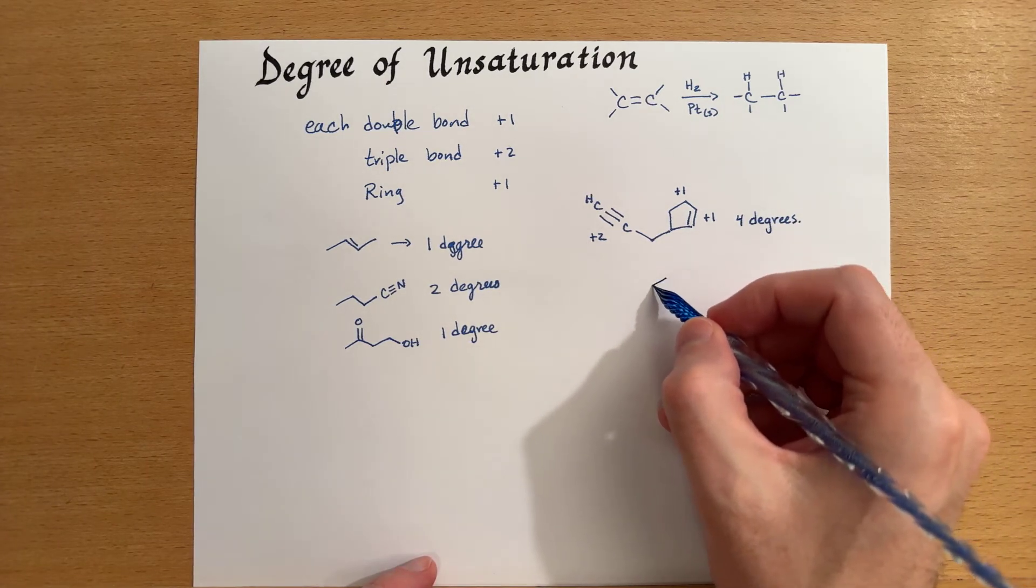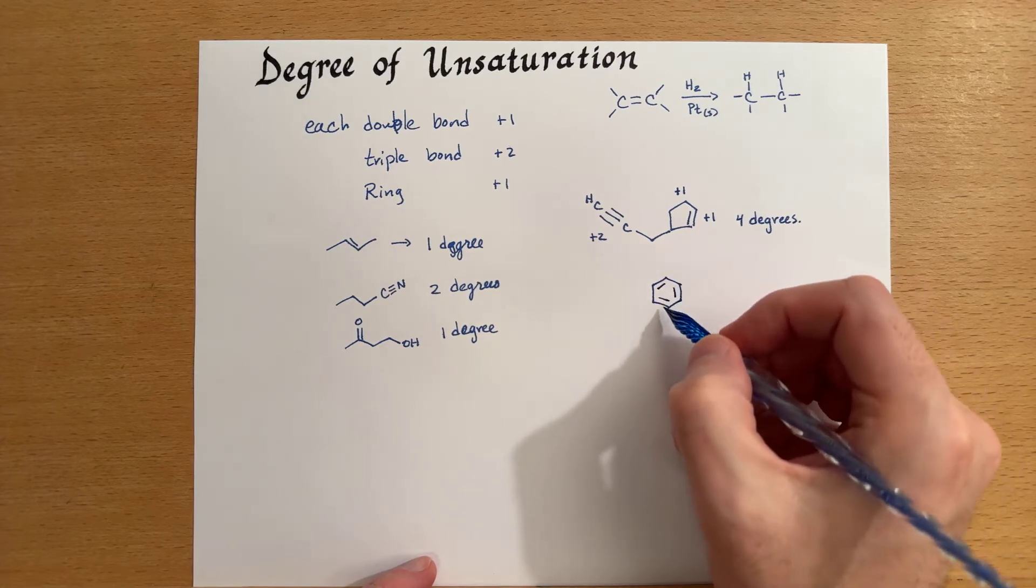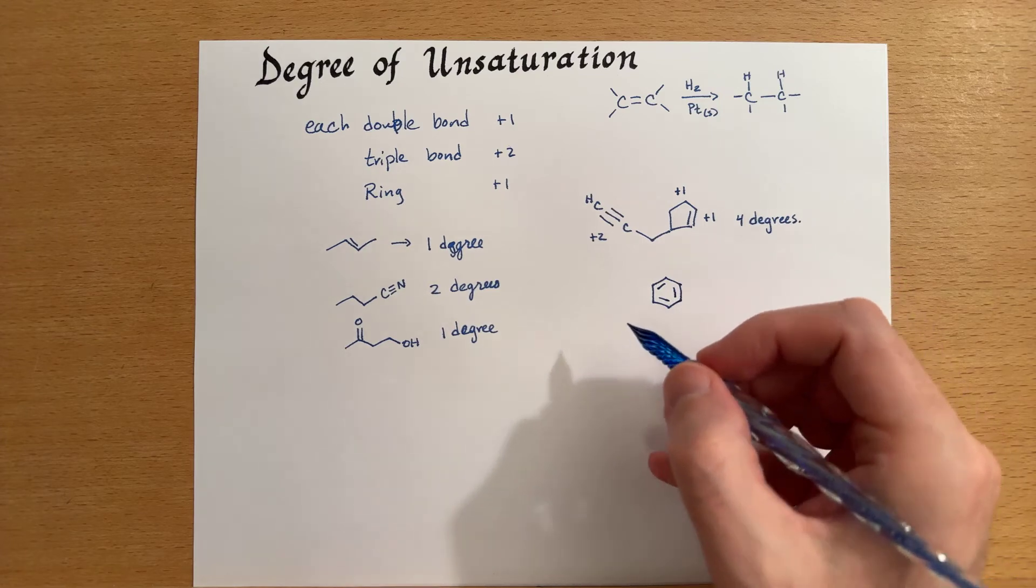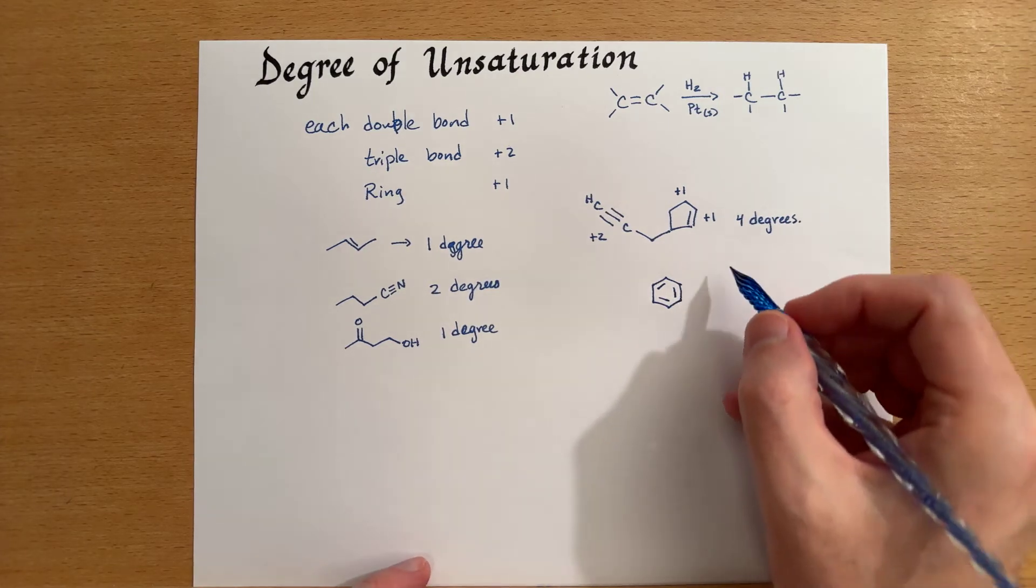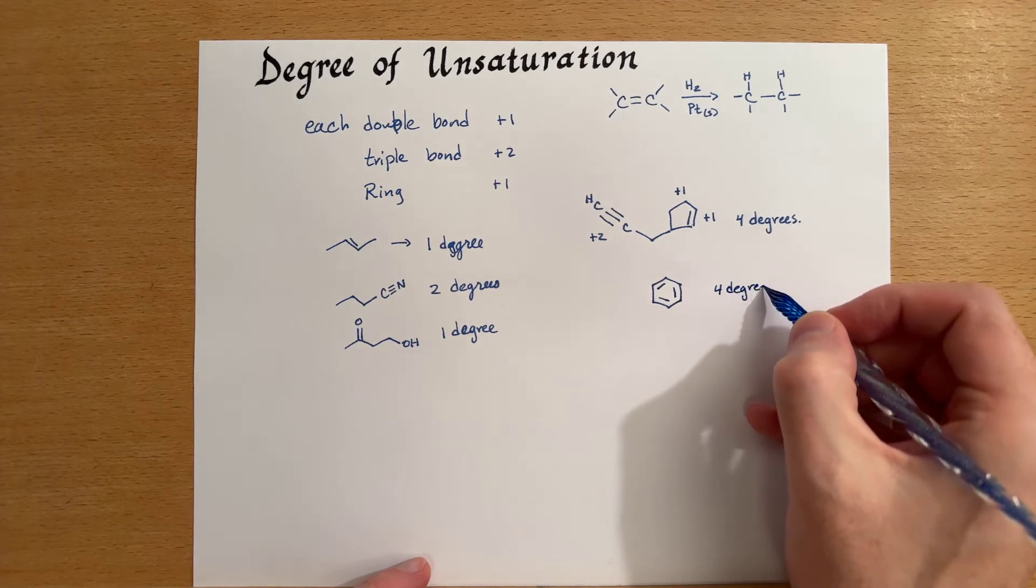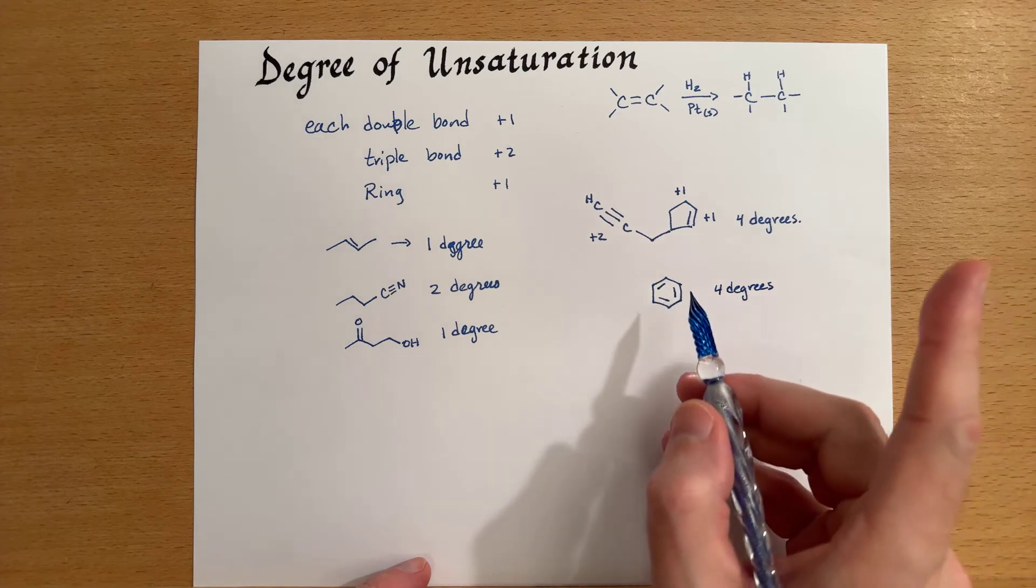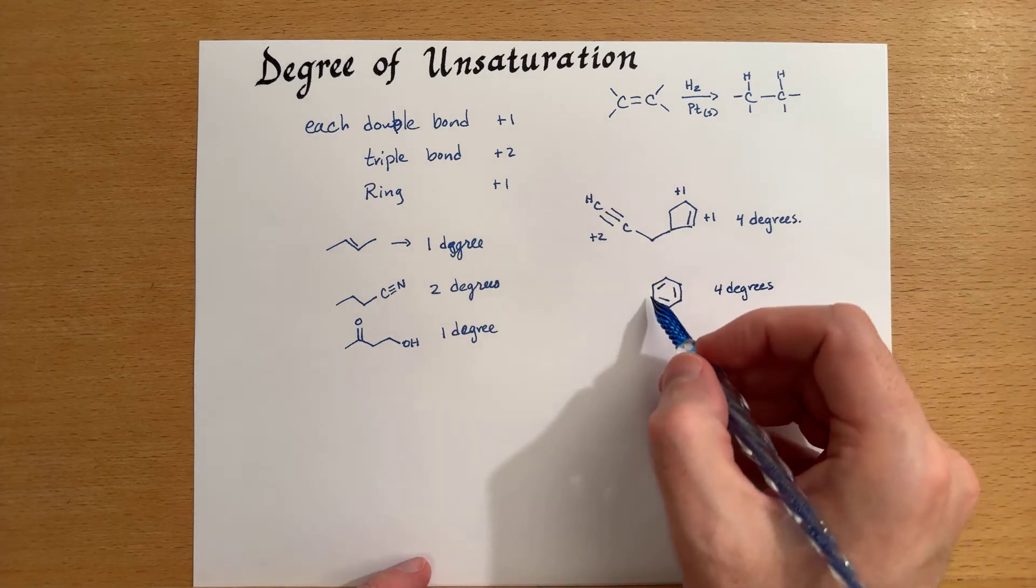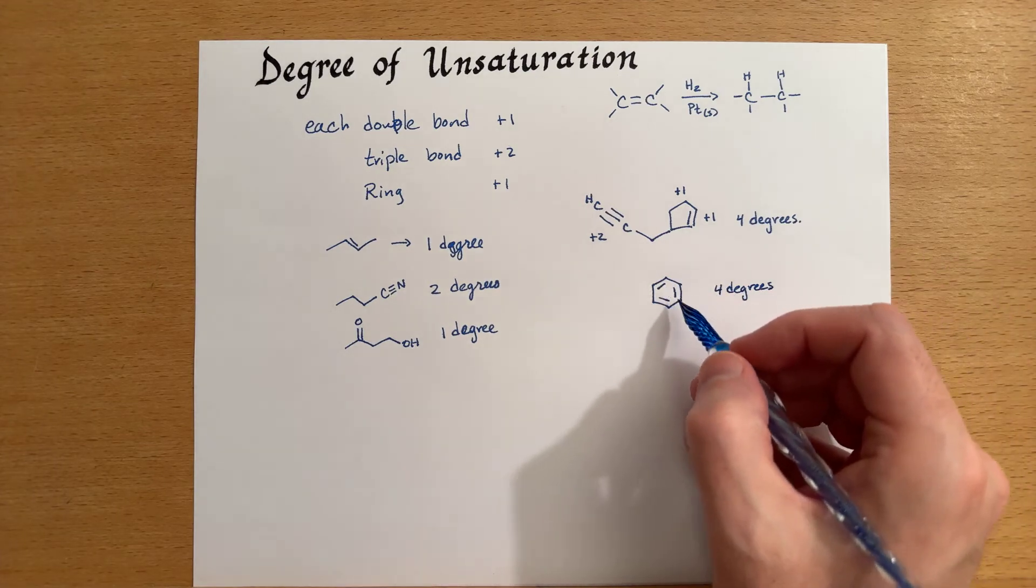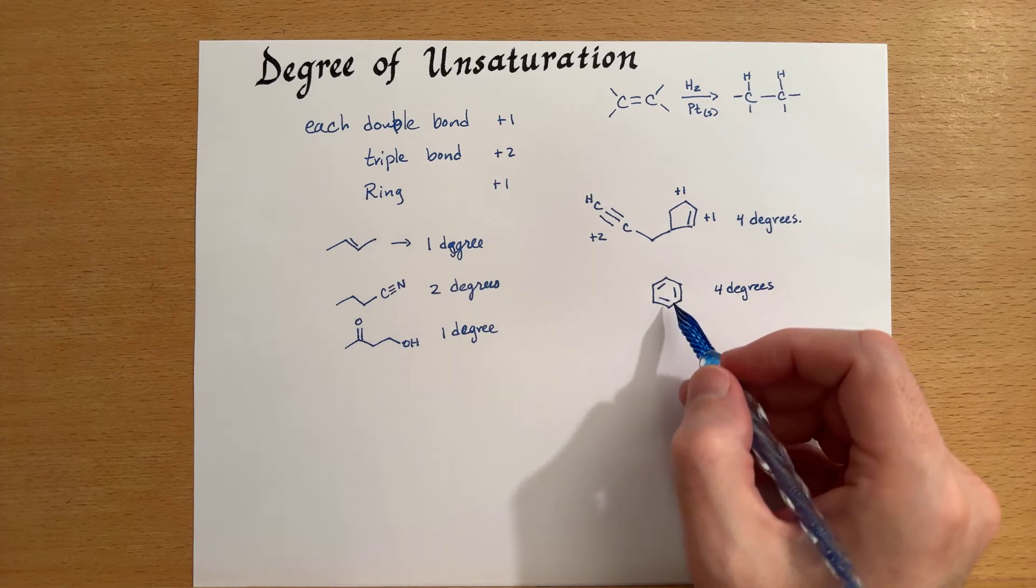Another similarly ring structure is a benzene ring, and you'll see these often enough. This also has four degrees. There's three double bonds. Each of those contributes one degree of unsaturation, and then the ring contributes the fourth one.